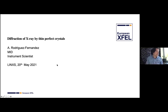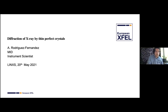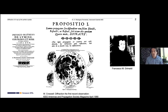Angel's talk is a study of dynamical diffraction of X-rays by thin perfect crystals. He first introduces Francesco Maria Grimaldi, the first person to talk about diffraction, who also introduced the idea of light as a wave analogous to water waves—in the 17th century. Grimaldi stated that light propagates not only by direct propagation, refraction, or reflection, but also by a fourth way: diffraction. The word 'diffraction' comes from the Latin 'diffractare'—to break into pieces.